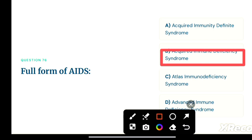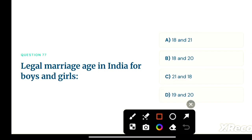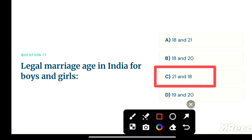Next question: legal marriage age in India for boys and girls — option A: 18 and 21, option B: 18 and 20, option C: 21 and 18, option D: 20 and 20. The correct answer is option C — 21 for boys and 18 for girls.